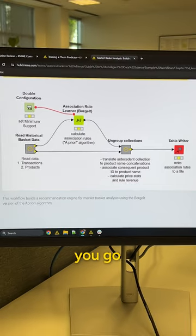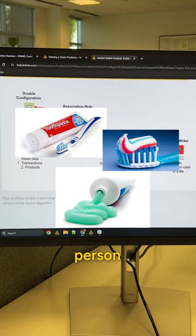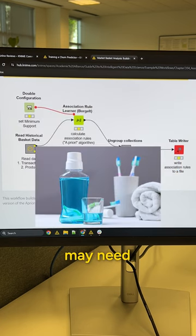So a simple example might be you go to Amazon and you buy toothpaste and Amazon looks at your prior purchases, the toothpaste combined with other things, and says this person may need mouthwash or this person may need a toothbrush.